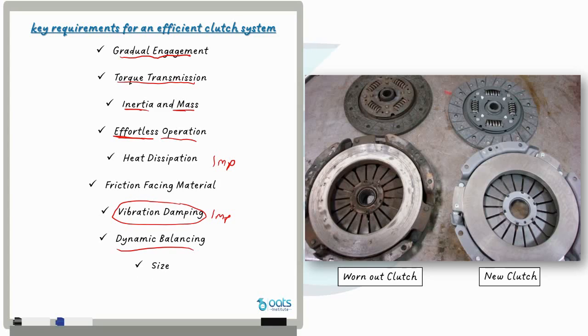Next is proper dynamic balancing minimizes vibrations and ensures smooth operations enhancing overall performance. The clutch size should be suitable for the vehicle's power and torque requirements, providing optimal performance and durability. A well-adjusted clutch should have the appropriate free pedal play to ensure precise control and prevent unnecessary clutch wear. By fulfilling these requirements, a well-designed clutch system can enhance the overall driving experience and contribute to the vehicle's performance and efficiency.